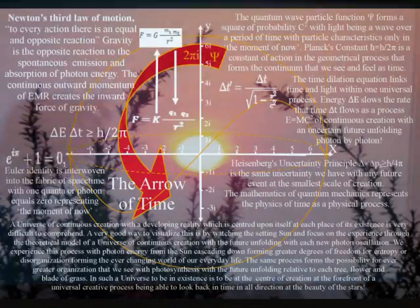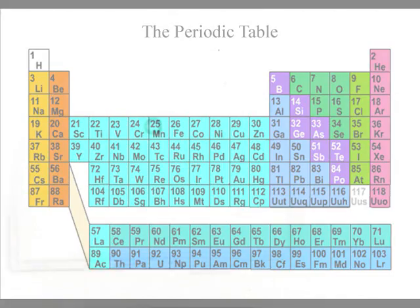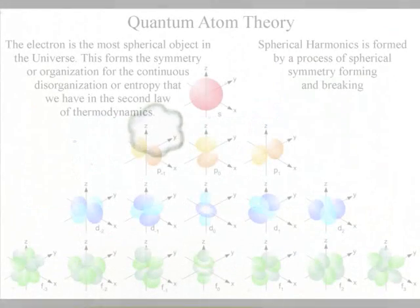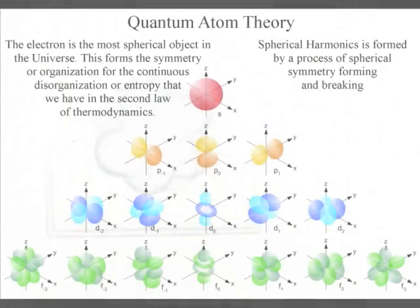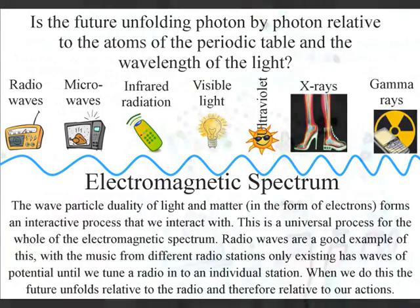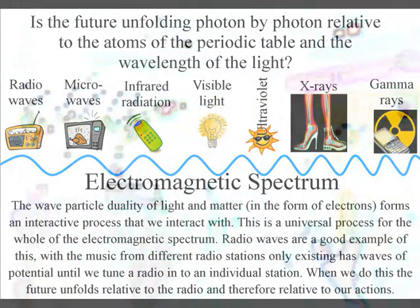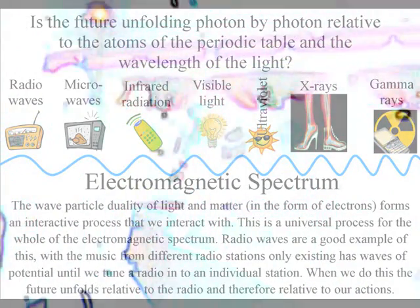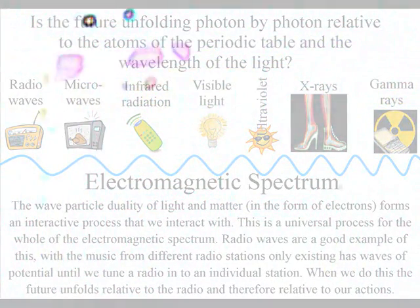In the matter or atom-based environment of our everyday life, the forces that bind us together are far too strong for the dark energy to have any effect. This process is formed by the spontaneous absorption and emission of photon energy relative to the atoms of the periodic table. If our eyes were more sensitive to light, we would be able to see that everything is radiating photon energy continuously. This process forms the ever-changing world of our everyday life that we see and feel as the continuum of time.